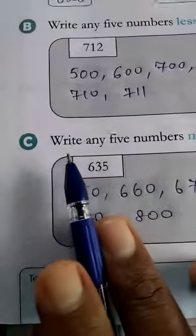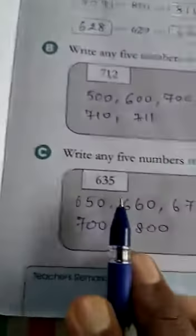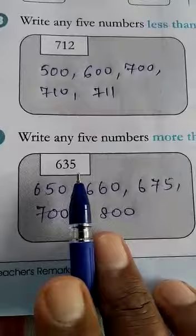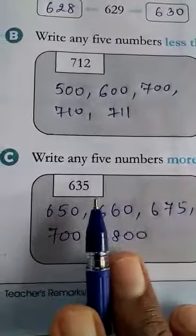Now, question number C. Write any 5 numbers more than. Number is 635. So, more than 635. You can write any 5 numbers.